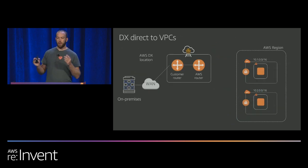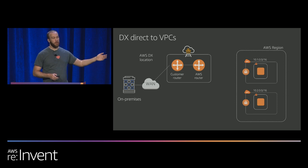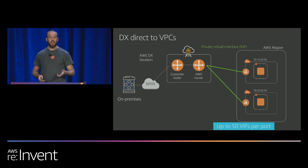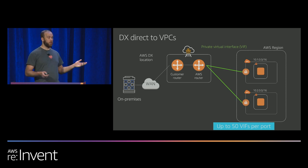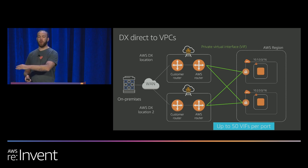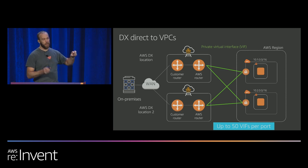Direct Connect works like this: we have a point of presence — about 50 to 75 around the world. You get a router there, connectivity, and you create a virtual interface to your VPCs — basically a VLAN that maps to a VPC. You can do that 50 times on a 1 gig or 10 gig dedicated port. For the right architecture, go get a second connection to a different Direct Connect location. This makes you eligible for three nines of SLA — the bare minimum HA architecture. That gets you to 50 VPCs.